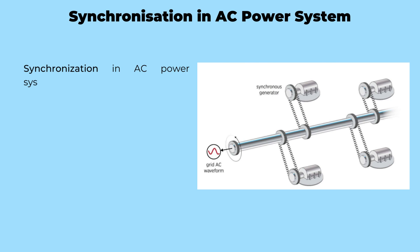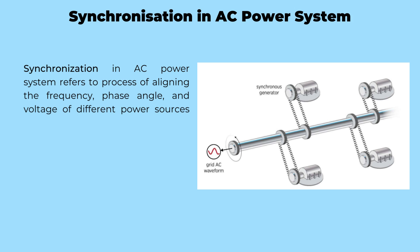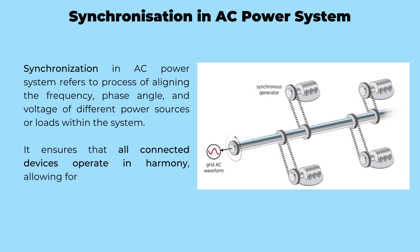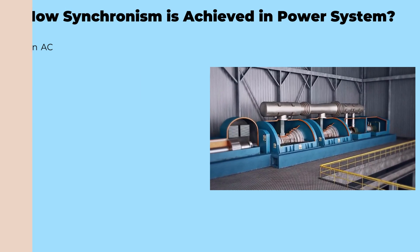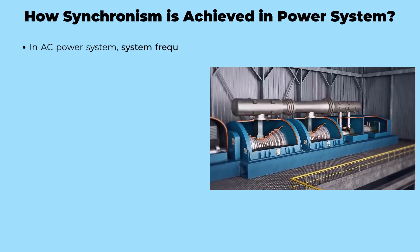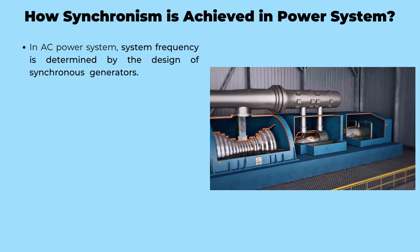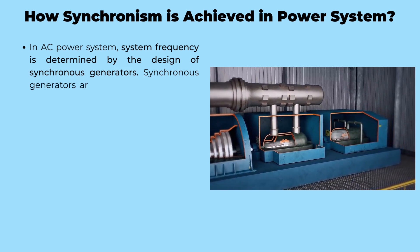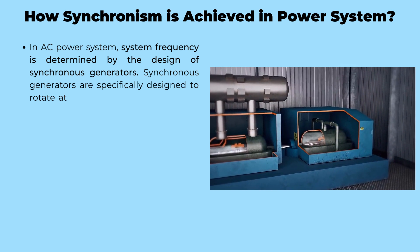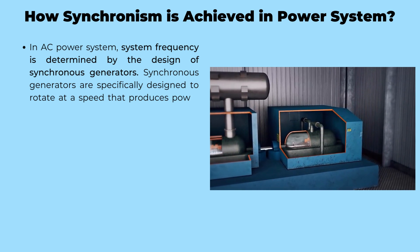Prior to Phase Locked Loop, let us first understand synchronization in AC power systems. In a power system, synchronization is the process that harmonizes the frequency, phase angle, and voltage of different power sources and loads, ensuring safe and efficient power transfer. In an AC power system, the system frequency is dictated by synchronous generators. These remarkable machines are meticulously designed to rotate at a speed that generates power at the desired frequency, such as 50 Hz or 60 Hz.